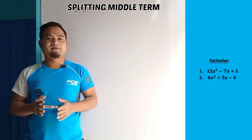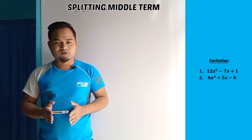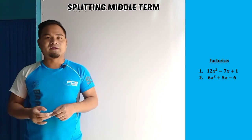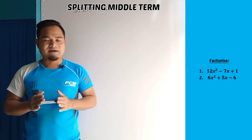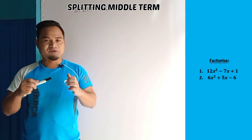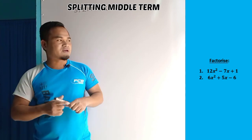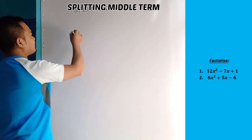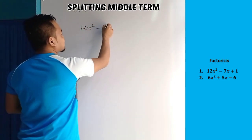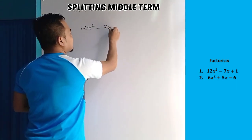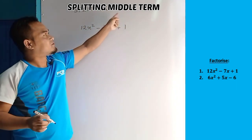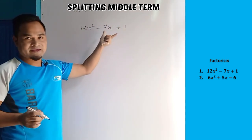Hello, welcome back to our video. Today's video is about factorizing using the splitting middle term method. If you want to know more about this video, please like this video. We will factorize 12x squared minus 7x plus 1. This is the splitting middle term method — this is the method of factorizing.